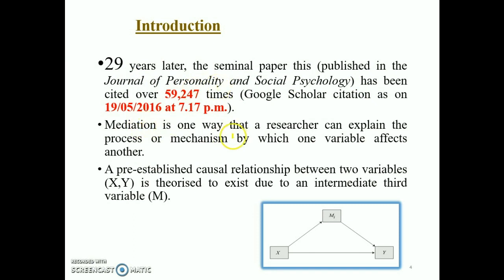Mediation is one way that a researcher can explain the process or mechanism by which one variable affects another. A pre-established causal relationship between two variables — let us say X and Y — is theorized to exist due to an intermediate third variable called M. In the simple mediation model, M is known as the mediator, and the entire model is called the simple mediation model.